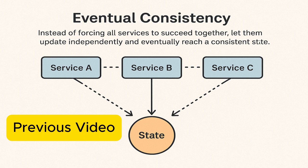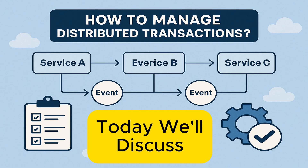In the previous part, we discussed what eventual consistency is and how, instead of forcing all services to succeed together, we let them update independently and eventually reach a consistent state. Today, we will take that idea one step further and see how we can apply it to manage distributed transactions.